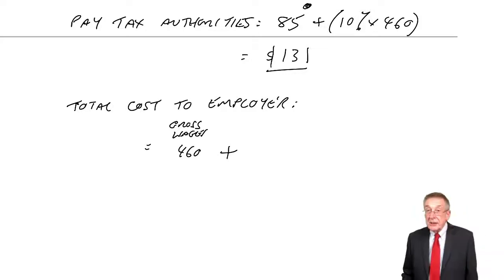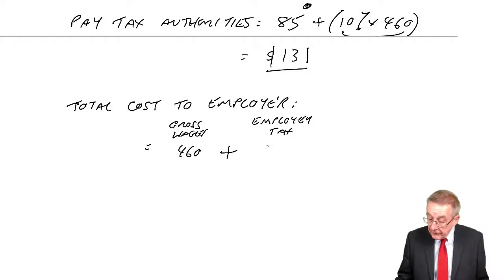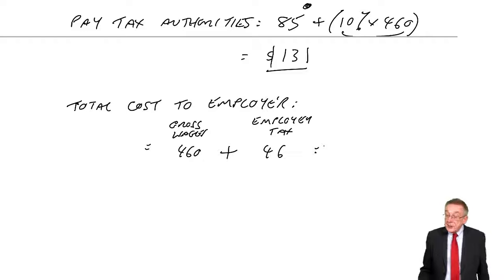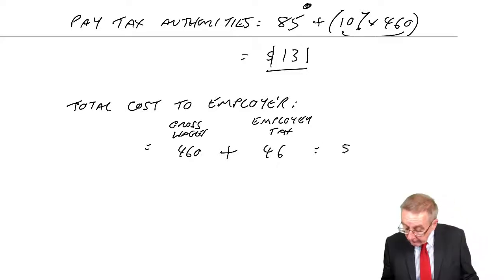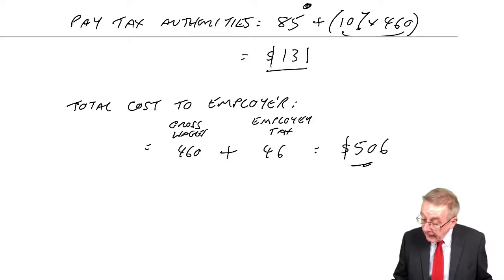In addition though, there was the tax on the employer, that 10% of $460. And so in total, it's costing the company $506 to employ this person. Okay, well, that was really just the terminology and how the tax is calculated.